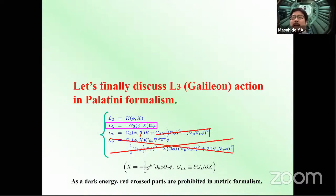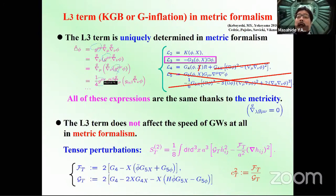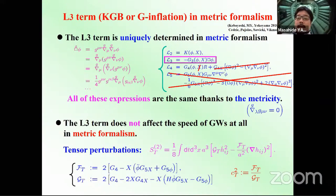Finally, let me briefly discuss the Galileon action in Palatini formalism for the remaining time. In metric formalism, the box-phi term is uniquely determined — even if we insert a metric g_{μν} in different places, thanks to metricity all such expressions are completely equivalent. Another important point is that the G3 term does not affect the speed of gravitational waves in metric formalism, because the G3 term never appears in the quadratic action for tensor perturbations.